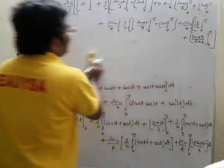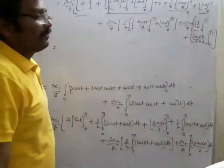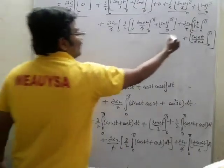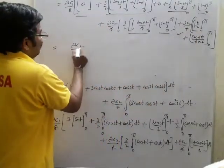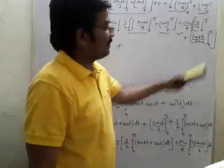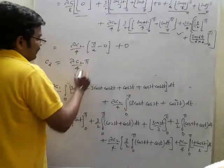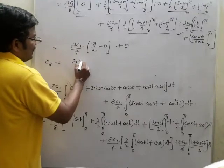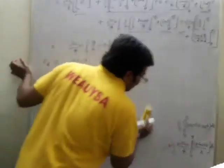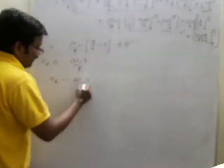Therefore this is 0, and this is 0, and this is also 0, and this is also 0, and this is also 0 — the total term is nothing but 0. This is 0 because sin(4π) is 0. This term gives λ·c2/4 · (π/2 - 0), and this is also 0. So everything is 0 except this one term, and you will be getting c2 = λ·c2/4 · π/2, meaning λ·c2·π/8. So we write this as c2 - λ·c2·π/8 = 0.